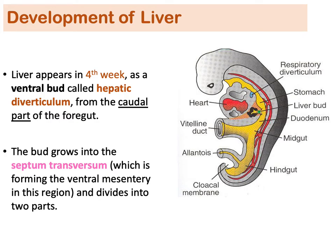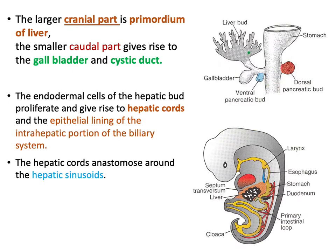The hepatic diverticulum grows into the septum transversum — a mesodermal structure that will form the central tendon of the diaphragm, above which are the primordial lungs and heart. As the liver bud grows into the septum transversum, it divides it into two parts: a cranial part and a caudal part.